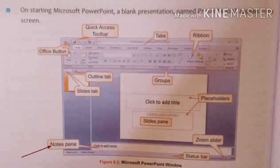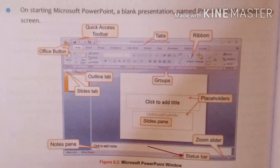Then we have the Notes pane. The Notes pane is helpful for noting down information related to any particular slide at the time of delivering your lecture — it is helpful for the audience to see all the points. We also have a Zoom Slider to adjust the size of our slides view. The Status Bar shows the status of our presentation. Finally, the main area is the Slide pane — this is where we prepare our presentation and can directly access text, pictures, and different objects.